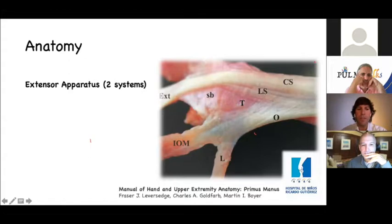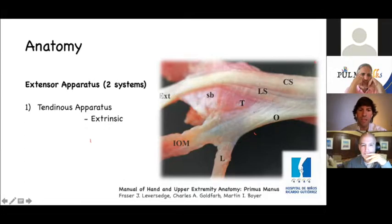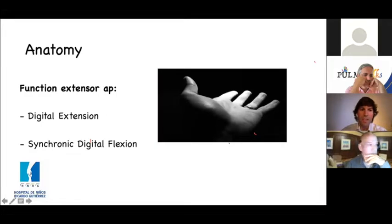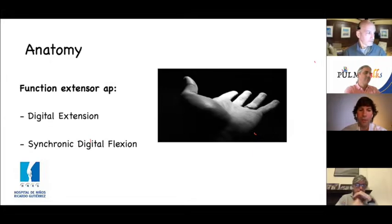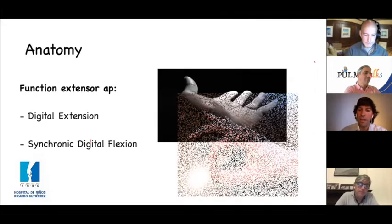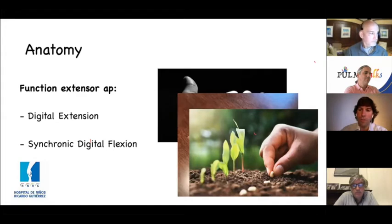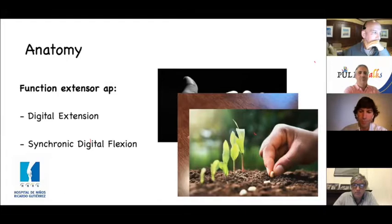The extensor apparatus can be divided into two systems: the tendinous apparatus, which we can divide into the extrinsic and intrinsic, and the retinacular system. The function of the extensor apparatus is to perform digital extension, but also to allow synchronic digital flexion — allowing the pulp to reach other pulps and touch objects in order to interact with the environment.